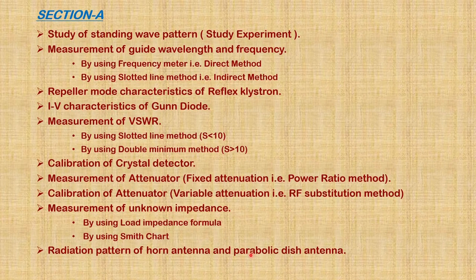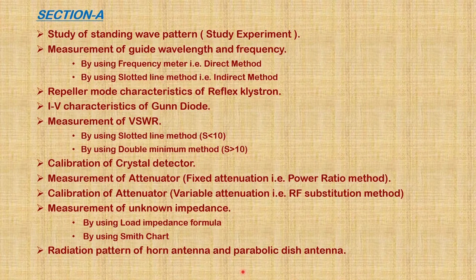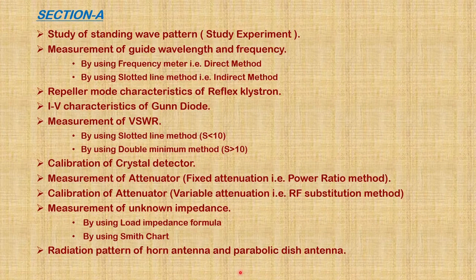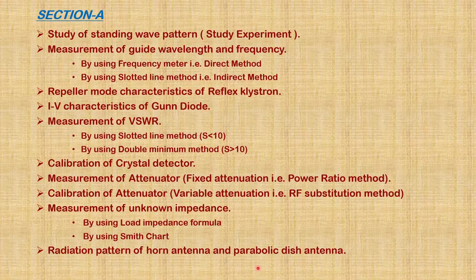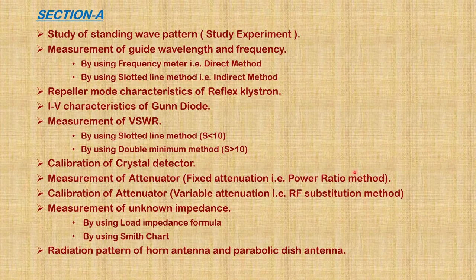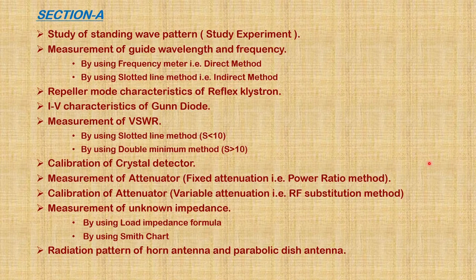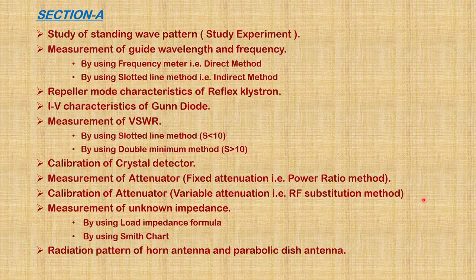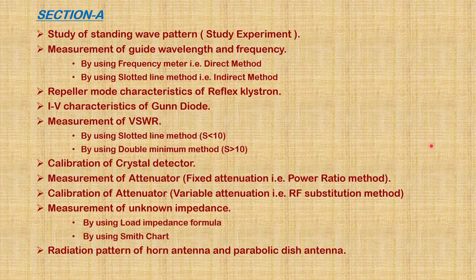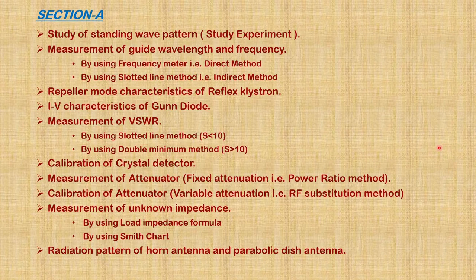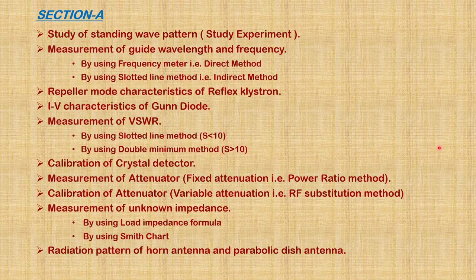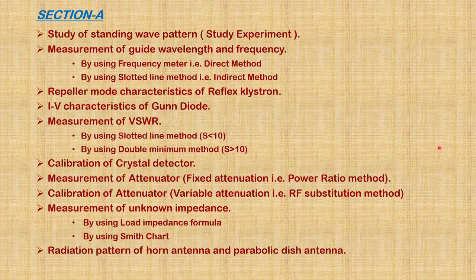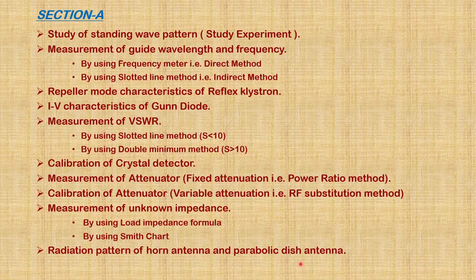Next experiment is radiation pattern of horn antenna and parabolic dish antenna. This is the last experiment in Section A. In previous experiments, we transmitted signals through closed waveguide from source to destination. But in this experiment, transmitter and receiver are separated with some distance D, with air as the transmission medium. When transmitter and receiver are line of sight, maximum power is transmitted to the receiver. Power intensity is maximum in the main lobe and minimum at side lobes. Using these values, we draw radiation patterns of horn antenna and parabolic dish antenna.